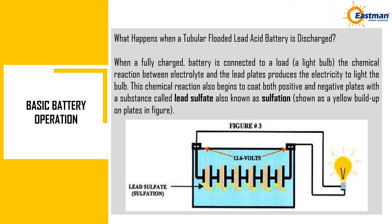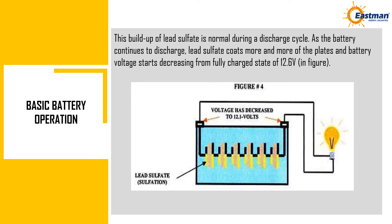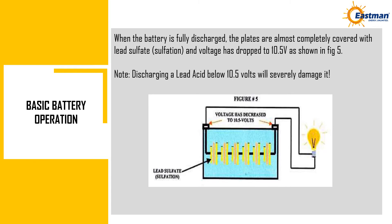Basic Battery Operation. When a fully charged tubular flooded lead acid battery is connected to a load such as a light bulb, the chemical reaction between the electrolyte and the lead plates produces electricity. This reaction also begins to coat both positive and negative plates with lead sulfate, also known as sulfation, shown as a yellow buildup on the plates in the figure. This buildup is normal during a discharge cycle. As the battery continues to discharge, lead sulfate coats more of the plates and battery voltage decreases from the fully charged state of 12.6 volts. When fully discharged, the plates are almost completely covered with lead sulfate and voltage has dropped to 10.5 volts as shown in FIG 5.